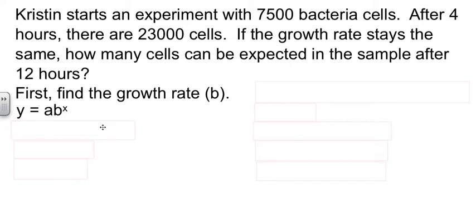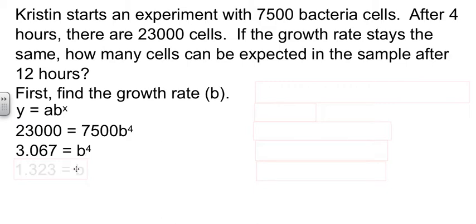We're working with the exponential equation. We know how much we have at a certain time. We have 23,000. We know what we started with, the 7,500. B, we don't know yet. And we know the amount of time is 4 hours. This is an equation we can solve. We divide by the 7,500. And then we take a fourth root to get rid of a fourth power. And my calculator tells me the fourth root of that number is 1.323. If you don't remember how to get a fourth root out of your calculator, just bring it in in class and ask me and I'll show you how to do it again.